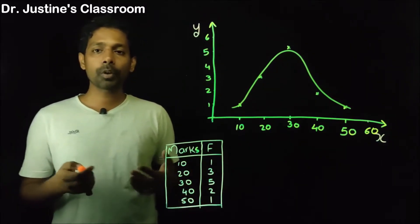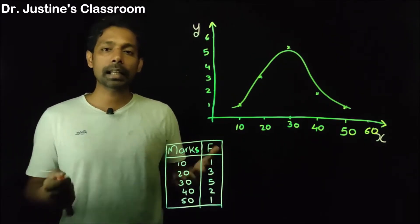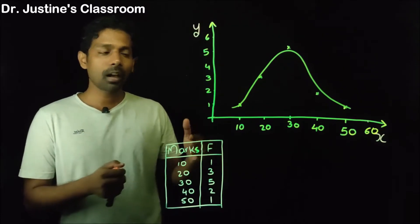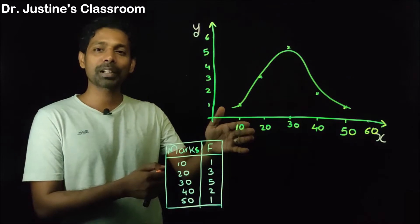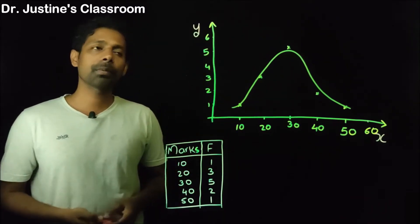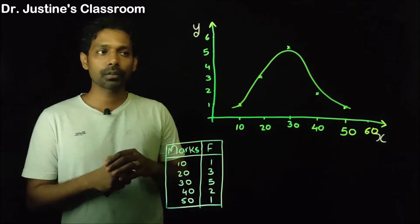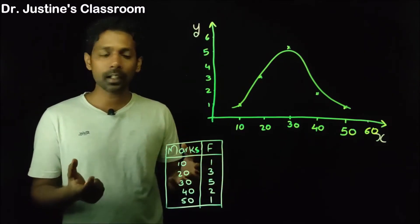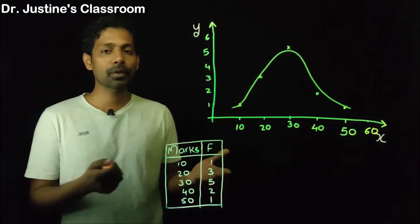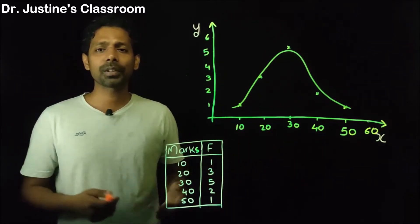Go to any classroom: majority get average marks, some fail, and some get extreme marks. Any characteristic tends to follow that pattern — majority in the center level, fewer at the extremes. If you take a sample from a population which follows a normal curve, and your sample is also normally distributed, that indicates your sample may be representing the population. However, your population does not necessarily need to be normally distributed to get a normally distributed sample — this is one of the assumptions of the central limit theorem.